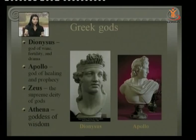Apollo is the god of healing and prophecy, sometimes called the sun god. Zeus is the supreme deity of gods, and Athena is the goddess of wisdom. Pictures of Dionysus and Apollo are shown here.